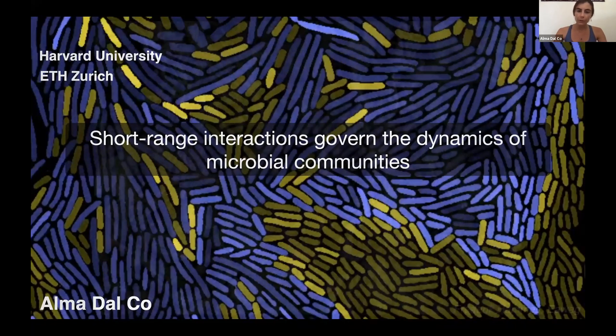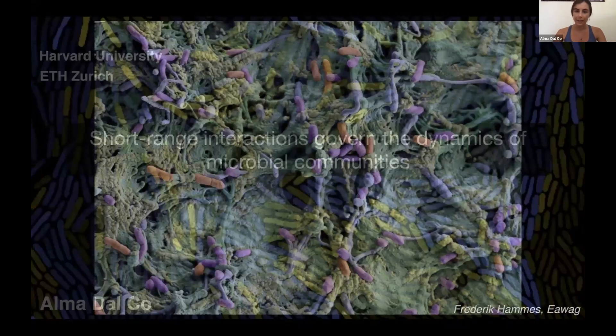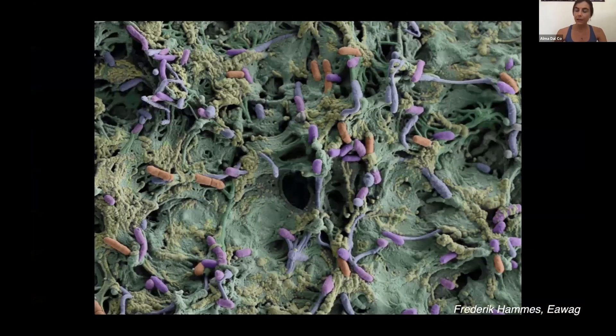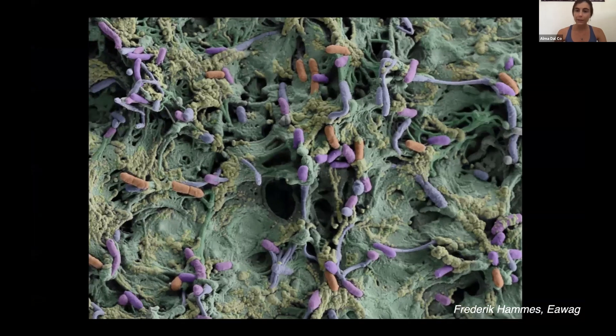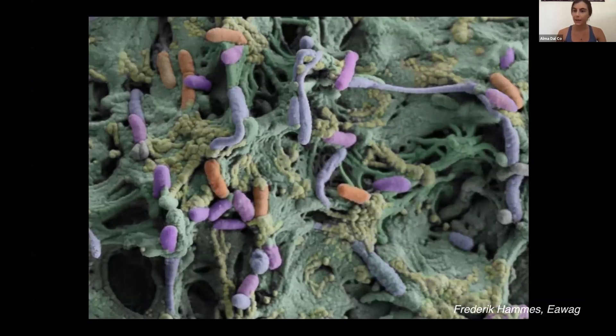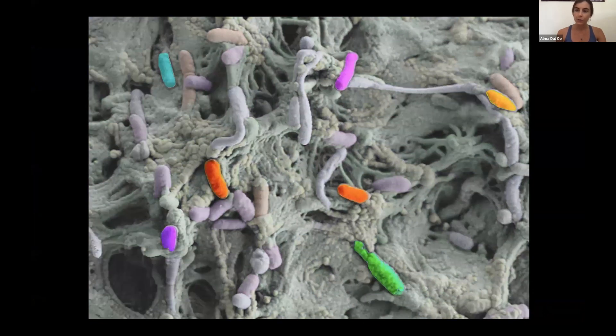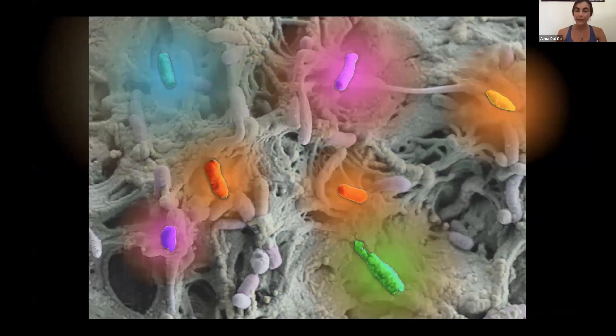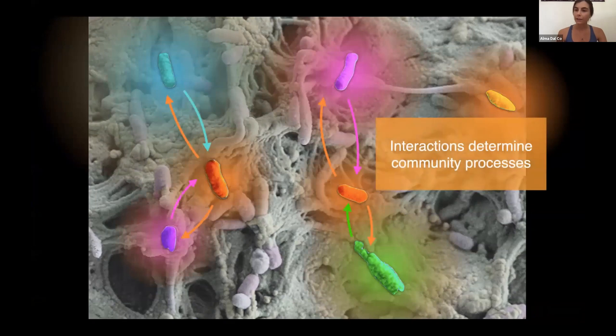Microbial communities are dense aggregates of cells that typically move little. Within these communities cells can take up and release metabolites like amino acids or sugars and these chemicals mediate interactions between cells. All these interactions together determine the processes that a community can perform.